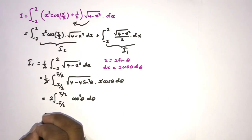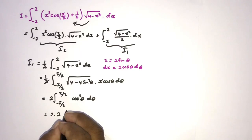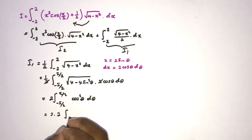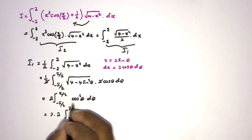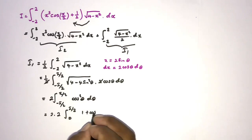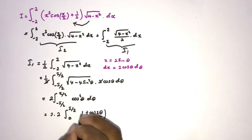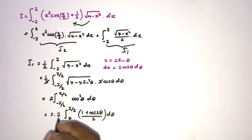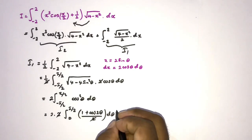By symmetry we can write 2 times 2 times the integral from 0 to pi over 2. We substitute cosine squared theta equals 1 plus cosine of 2 theta over 2. The two 2s cancel, giving us the integral from 0 to pi over 2 of 1 plus cosine of 2 theta d theta, multiplied by 2.